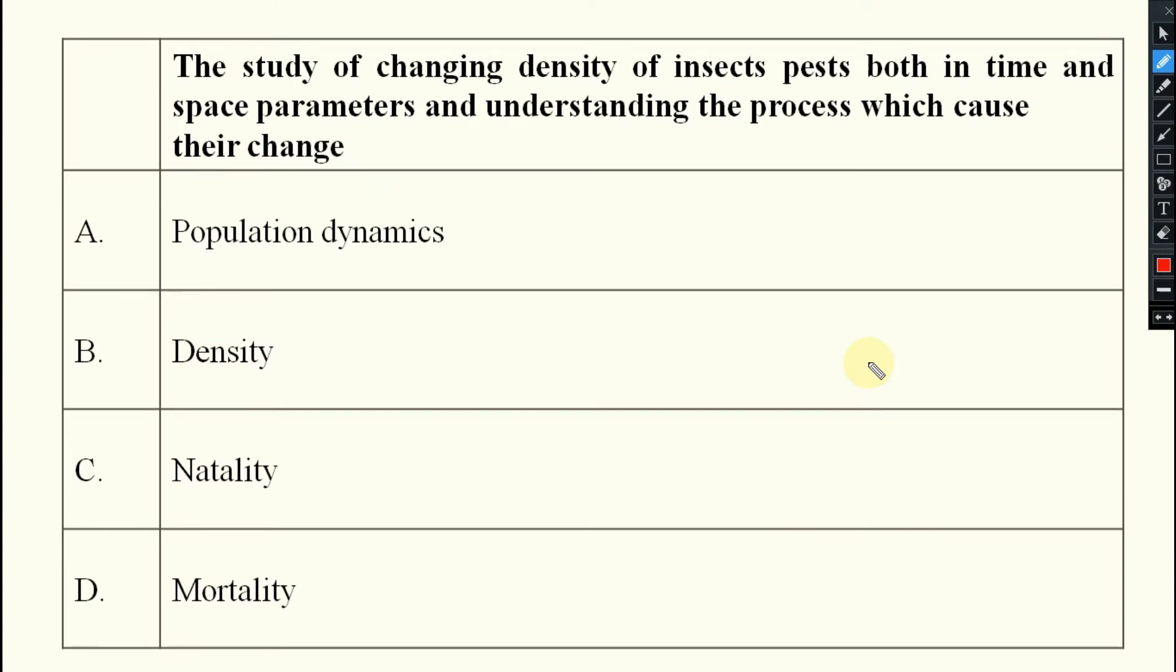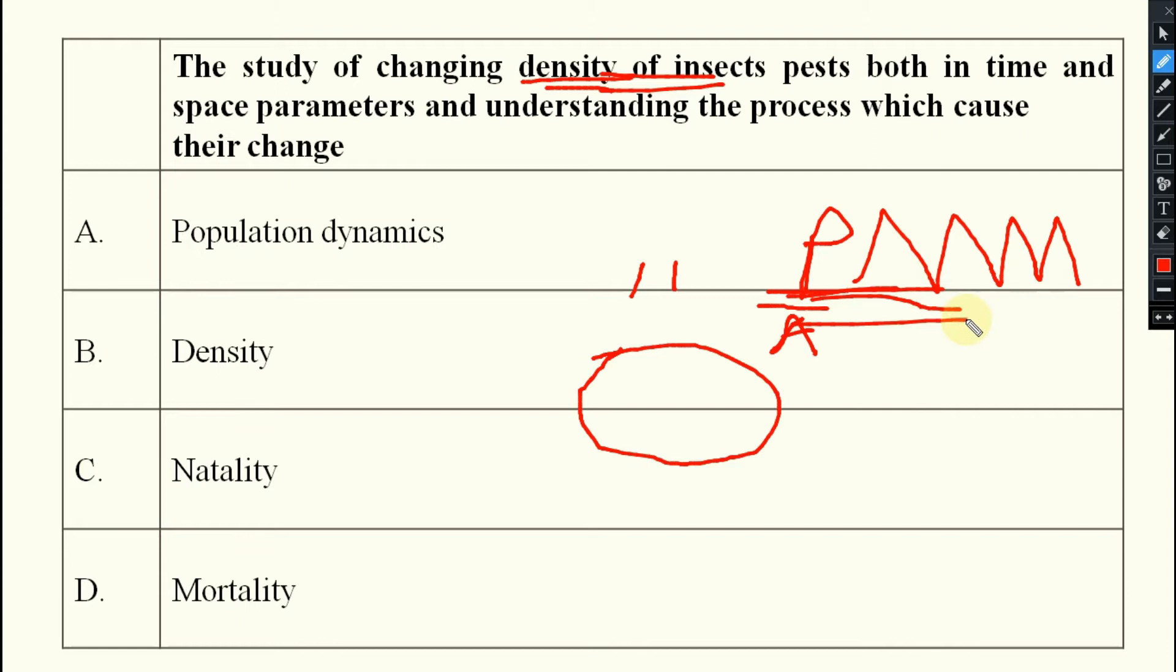The first question: the study of changing density of insects. What is density? Suppose a place is there, in that place change of the population density means what? Population per area. So what is it telling? Changing density. That means the population is changing. It may be increasing or decreasing. It is changing in a particular area of what? Insect.